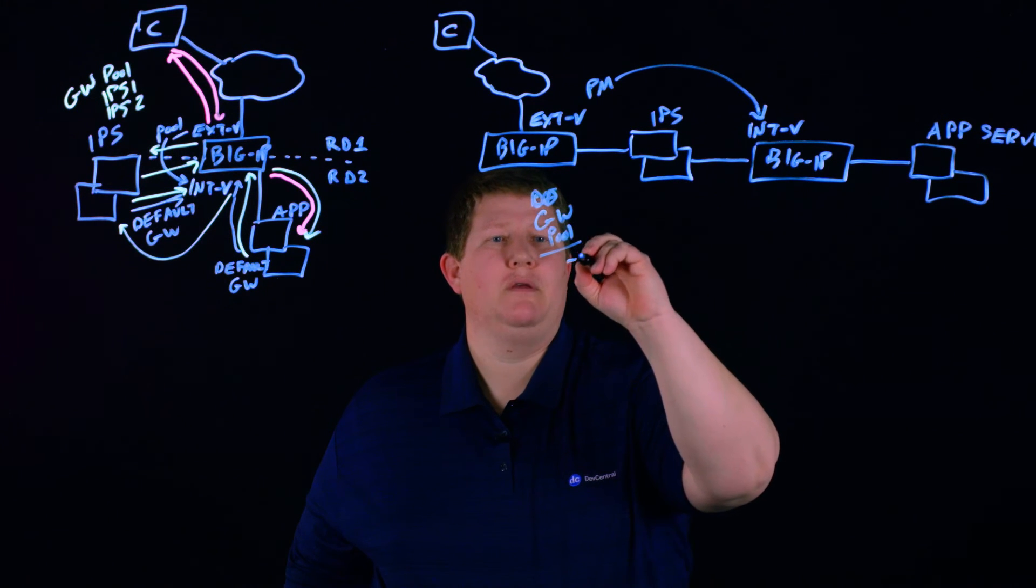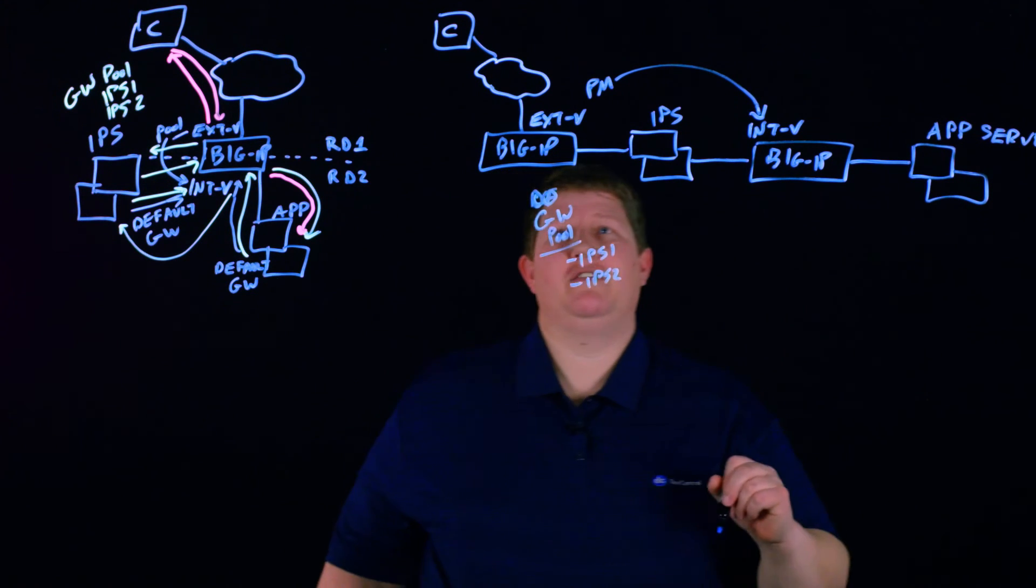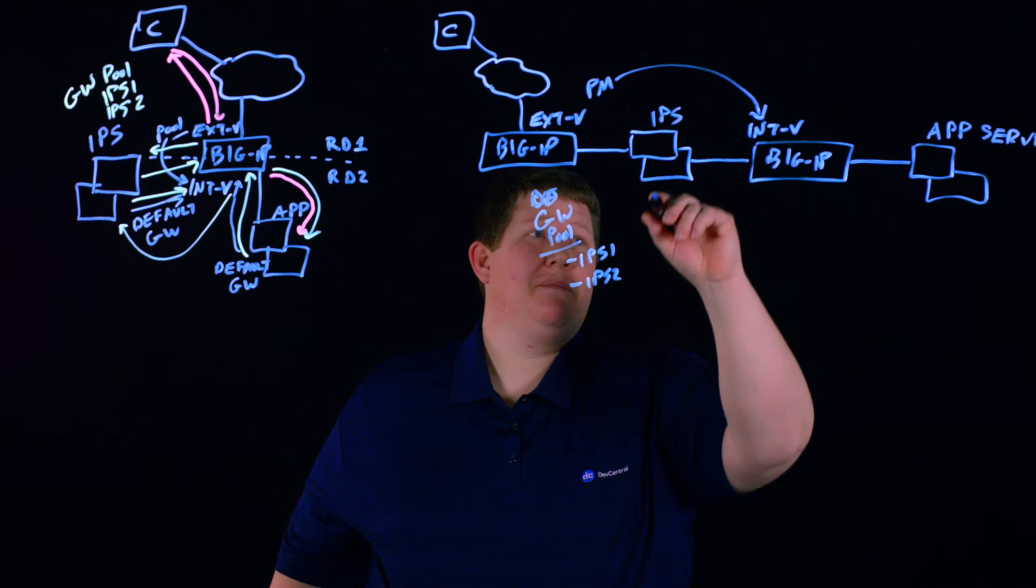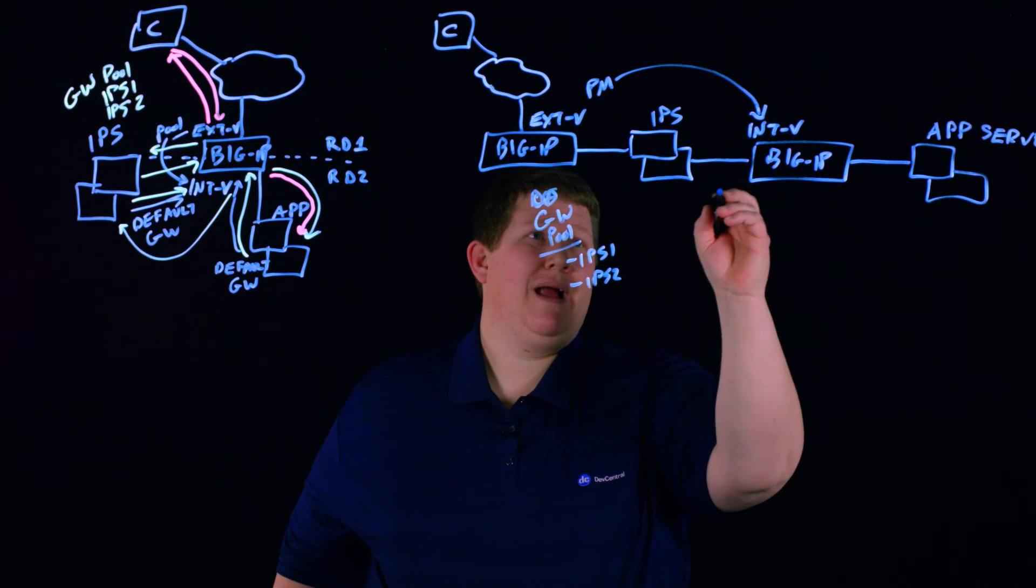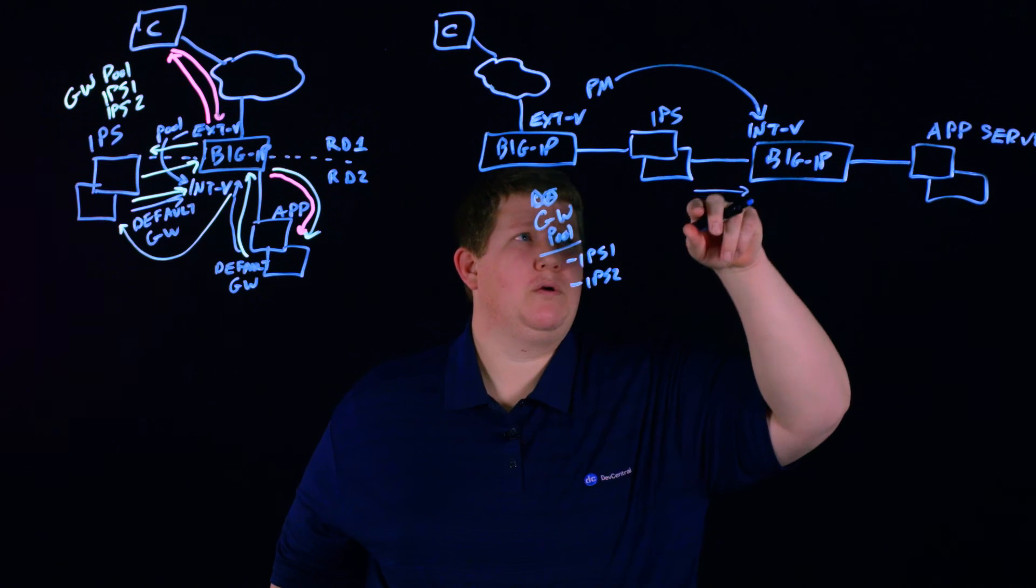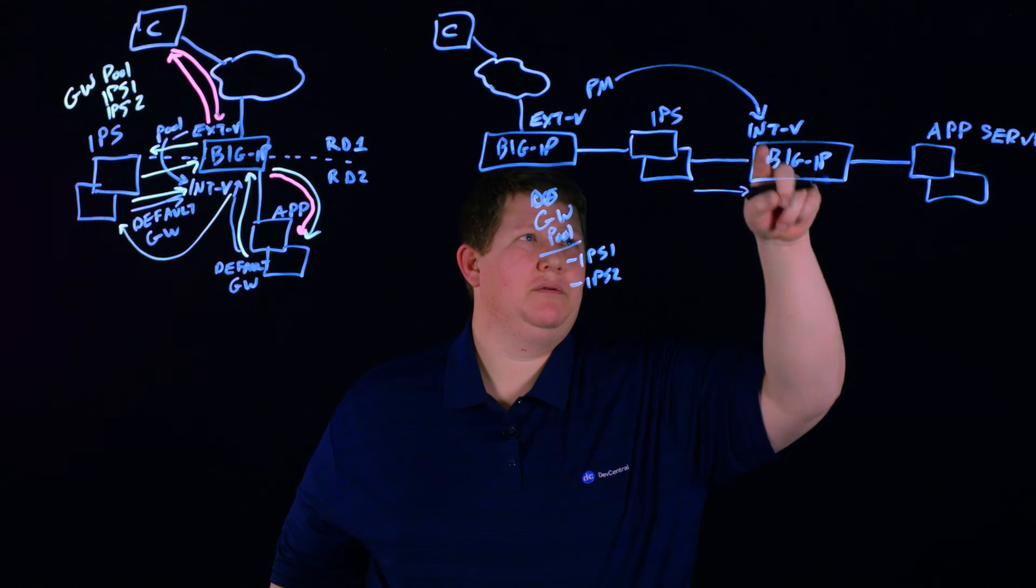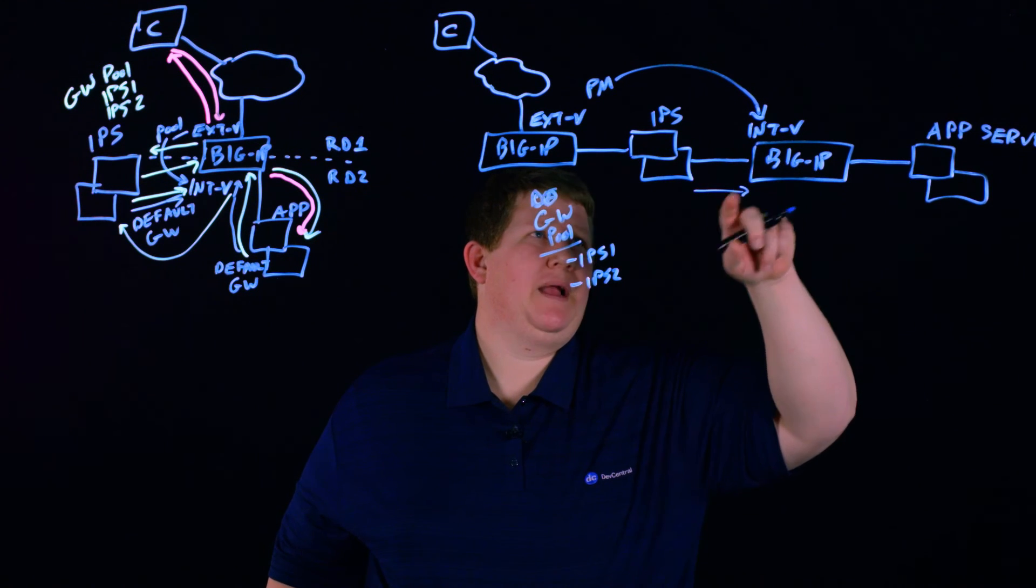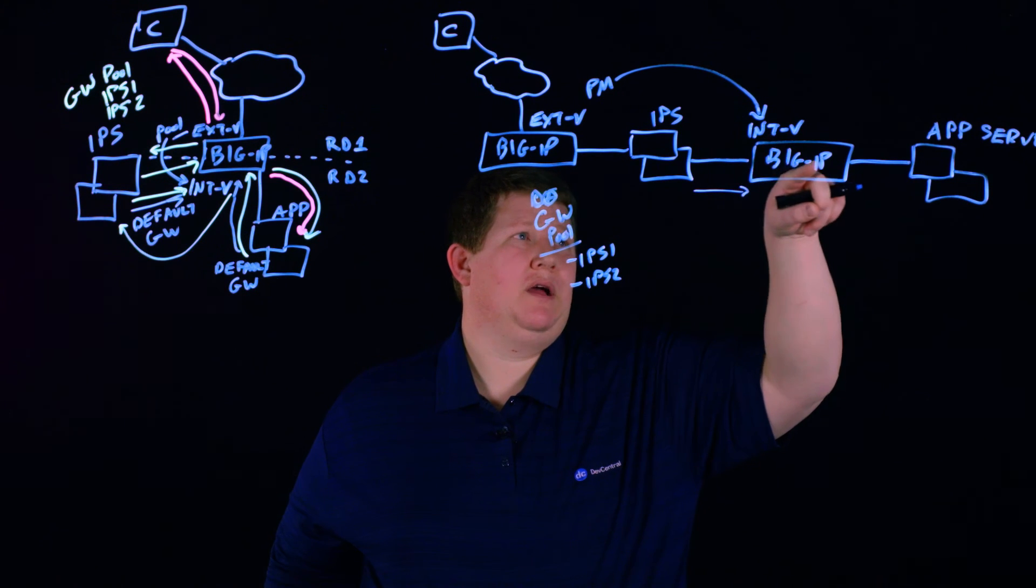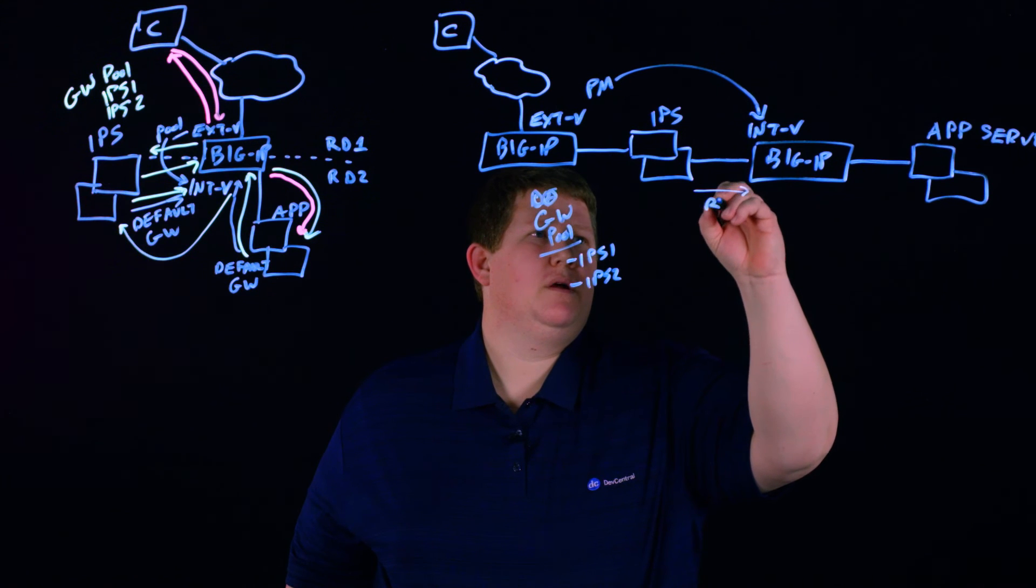In that gateway pool is IPS1 and IPS2. The BIG-IP, when that traffic comes in, will route this over. The IPSs need a route—doesn't have to be a default route but needs a route unless it's on the local network—to this other BIG-IP. We'll need some way to get the destination of this internal VIP over to this BIG-IP, so we need a route here.